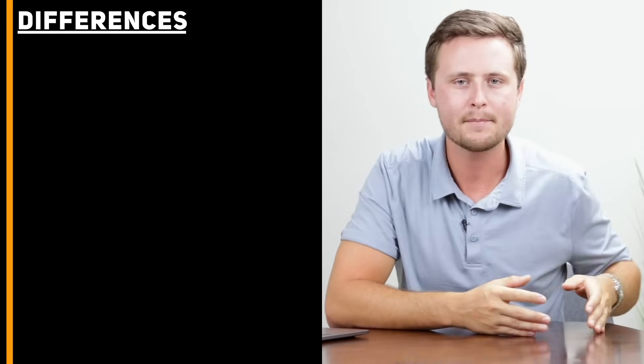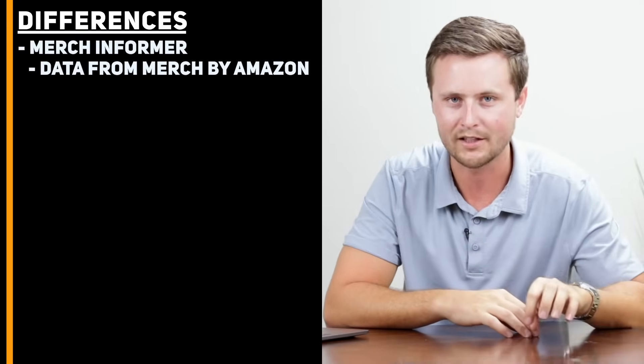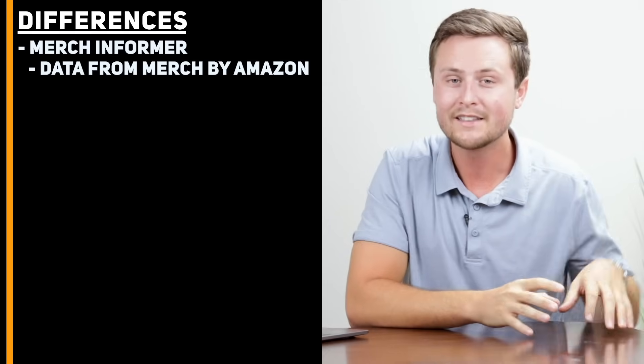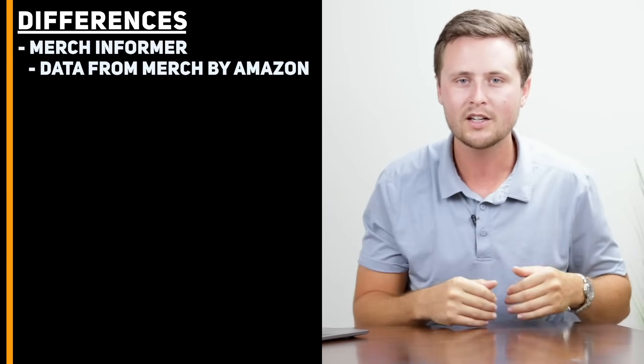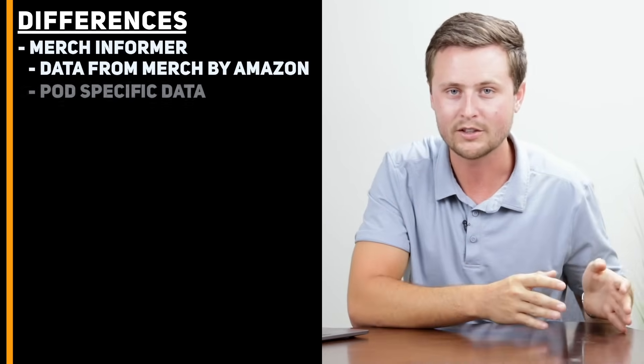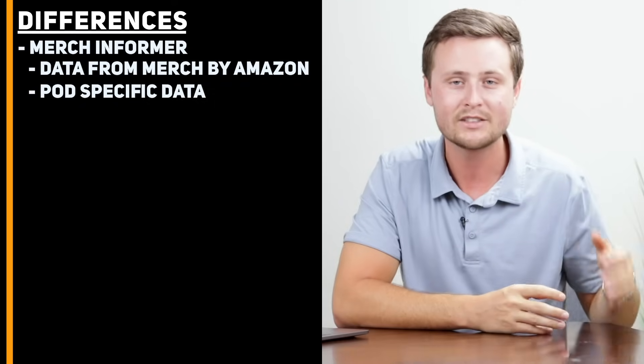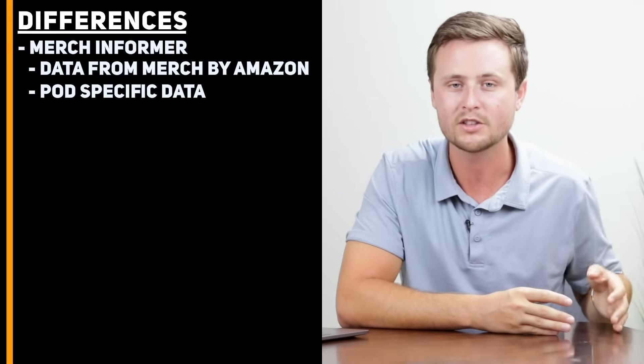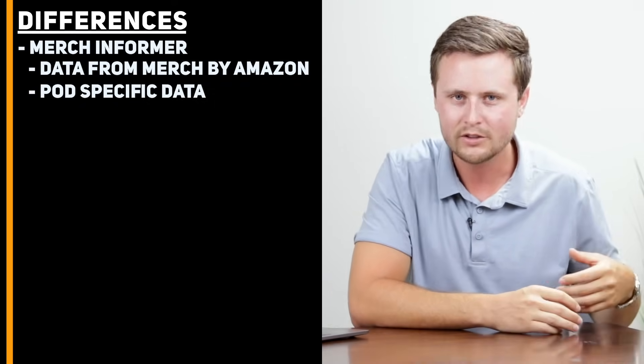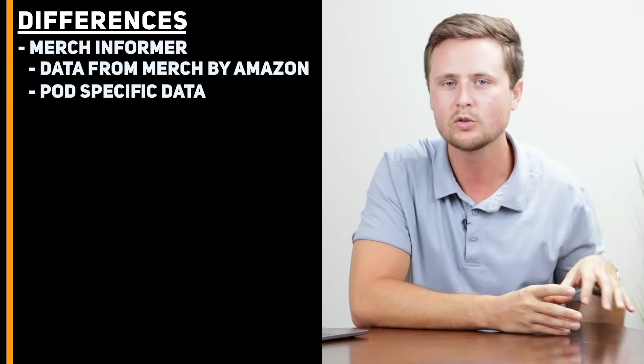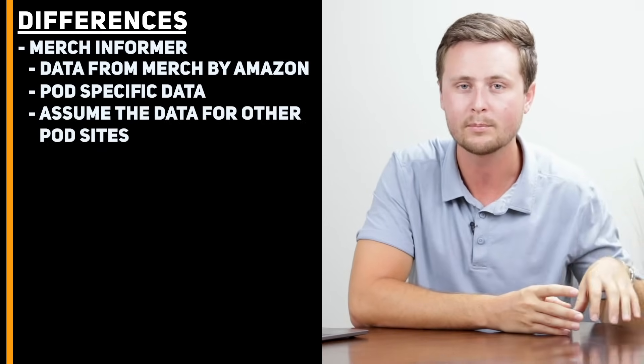Now with that in mind when we look at Merch Informer, Merch Informer actually uses data from Merch by Amazon. Merch by Amazon is one of the largest print-on-demand websites. The reason that I really like this is because you're talking about niches specifically in print-on-demand. You're not talking about niches for general Google searches. Now since Merch by Amazon is one of the largest print-on-demand platforms, what I personally do is I take that information on that specific niche and I just assume that it is the same for Teespring and Redbubble as well.